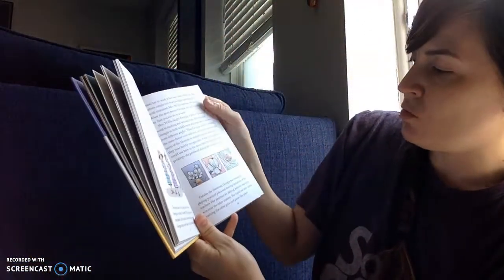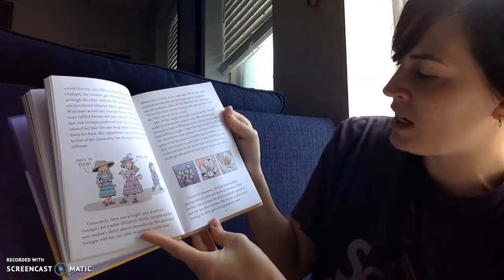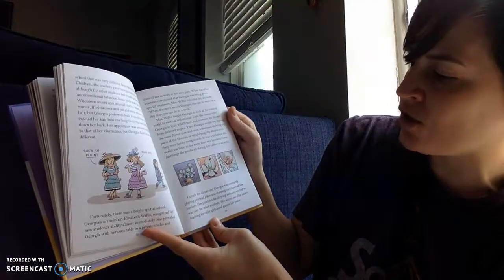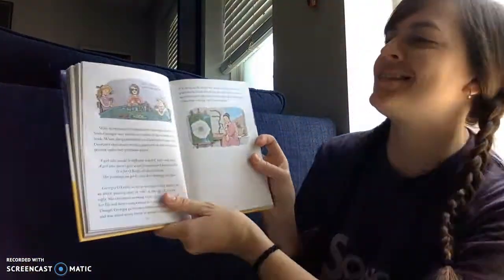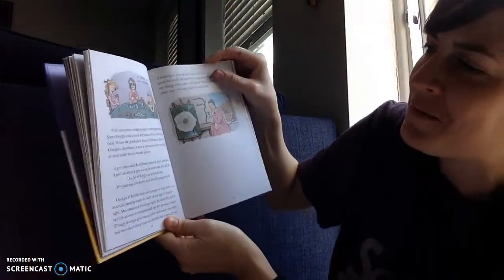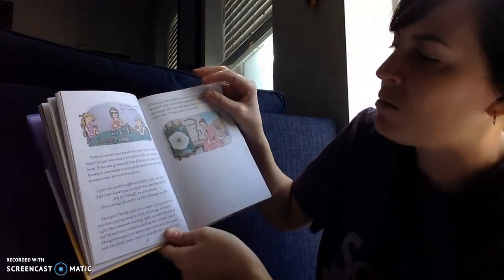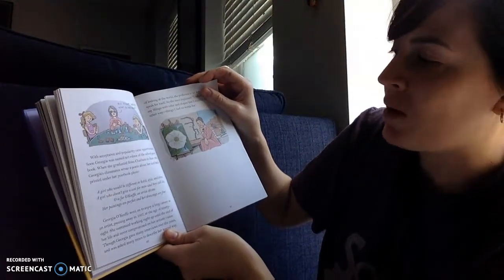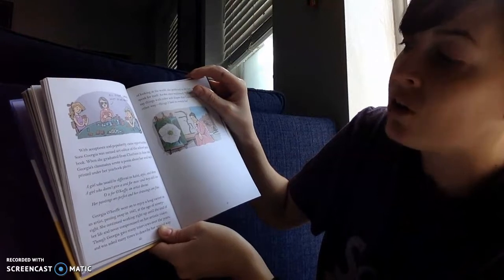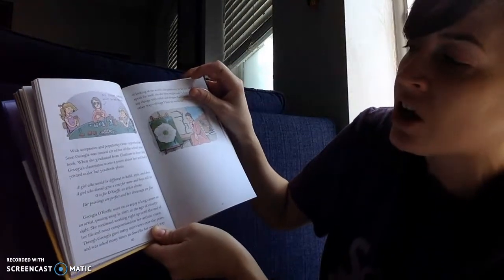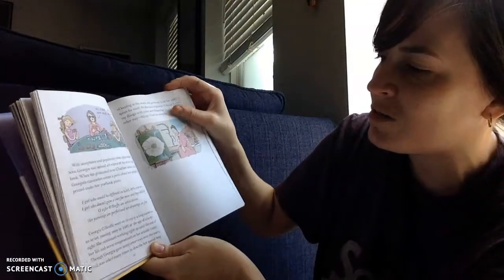Outside the classroom, Georgia was constantly playing practical jokes and drawing caricatures of her teachers. Her penchant for defying authority started to win over the other students. She stayed out after curfew, teaching the other girls card games like poker. With acceptance and popularity came opportunities. Soon, Georgia was named art editor of the school yearbook. When she graduated from Chatham in June 1905, Georgia's classmates wrote a poem about her and had it printed under her yearbook photo. A girl who would be different in habit, style and dress. A girl who doesn't give a cent for men and boys still less. O is for O'Keeffe, an artist divine. Her paintings are perfect and her drawings are fine. Oh, what a sweet, sweet poem for her.